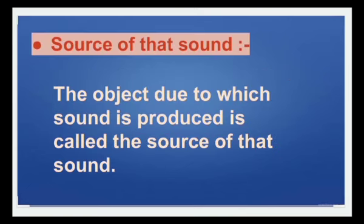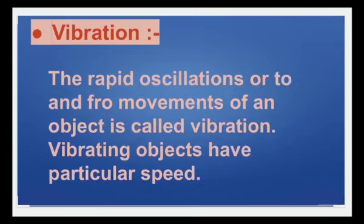The source of sound: the object due to which sound is produced is called the source of that sound. Vibration: the rapid oscillations or to-and-fro movements of an object are called vibration. Vibrating objects have a particular speed.